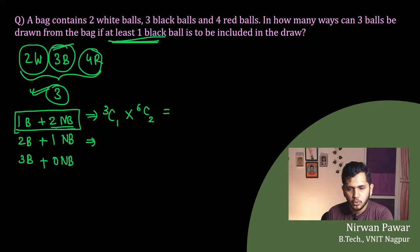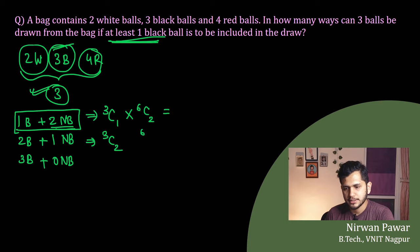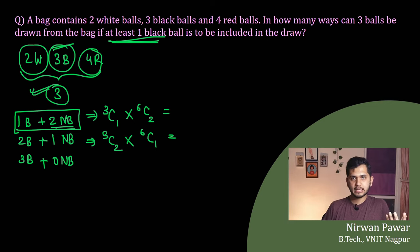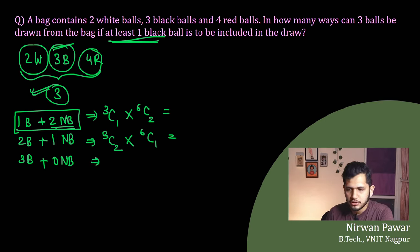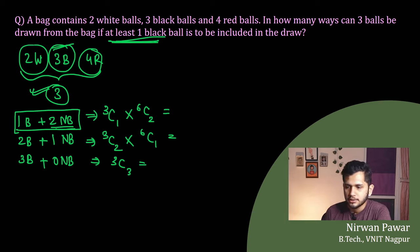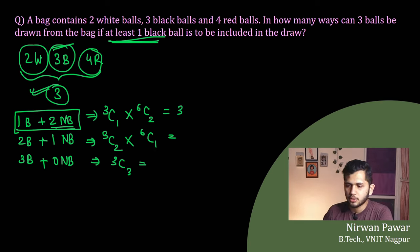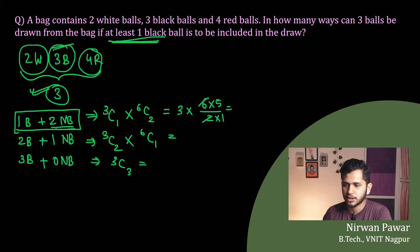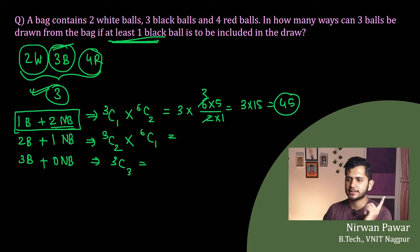Case 2: select two black balls, then one non-black ball remains. The number of ways is 3C2 into 6C1. Calculating: 3C2 can be written as 3C1, which equals 3, and 6C1 equals 6, so 3 into 6 gives 18 ways. For Case 1: 3C1 into 6C2 — 6C2 equals (6×5)/(2×1) = 15, so 3 into 15 equals 45 ways.